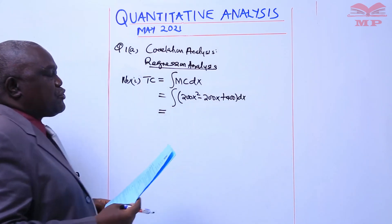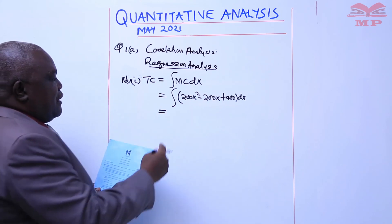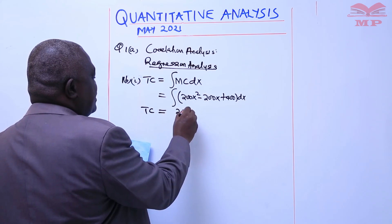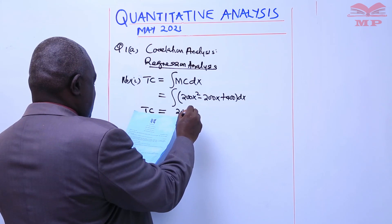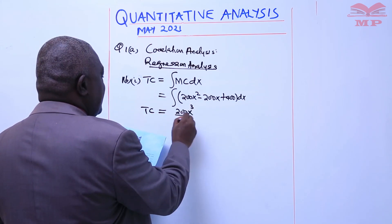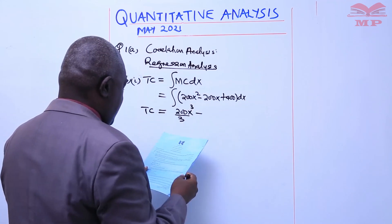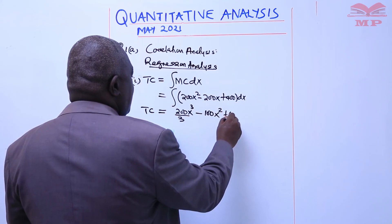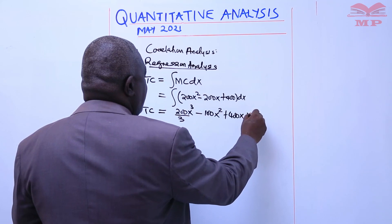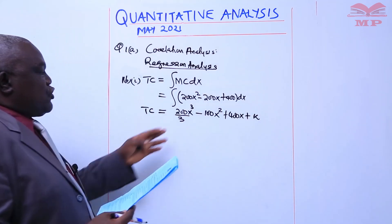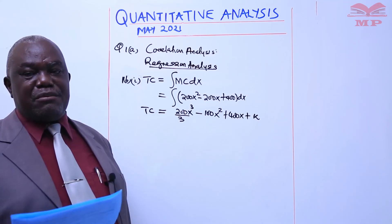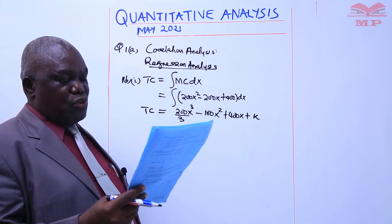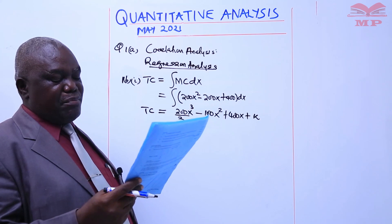Integration increases the power, as opposed to differentiation which decreases it. Integrating gives us: 200x cubed over 3, minus 100x squared, plus 400x, plus a constant — call it k or c. Total cost normally comprises two parts: variable cost as well as fixed cost. Here, k stands for the fixed cost.